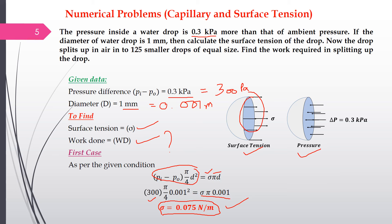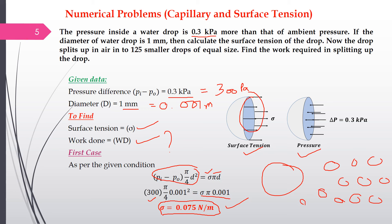Moving to the second part: the big drop is divided into 125 smaller drops. There will be an increase in total surface area. We first calculate that increase in area and then use it to find the work required to produce the 125 smaller drops.